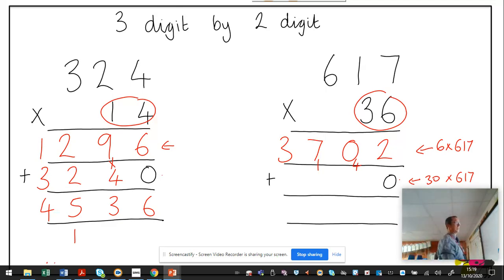Now I'm going to do 30 times 617. Three times seven is 21. So my one goes there, two underneath the next column. Three times one is three, add my two, five. Three times six, 18.